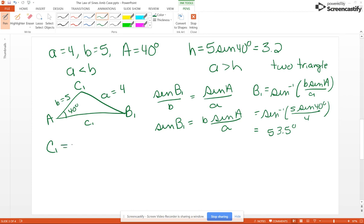So C1 is going to be 180 minus 40 minus 53.5 degrees, which is 86.5 degrees. Now side C1 we're going to have to find using law of sines.